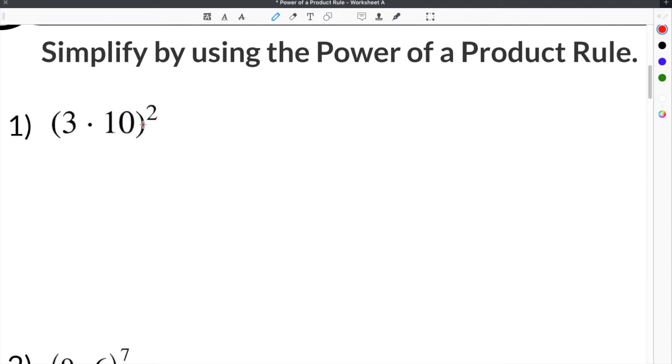Here we are at the first problem for the power of a product rule. The first problem gives us 3 times 10 raised to the second power. Now this 2 means that we are squaring the quantity 3 times 10. So we could rewrite 3 times 10 as 3 times 10 times 3 times 10. So now we have the quantity 3 times 10 times itself one time because we are squaring it.